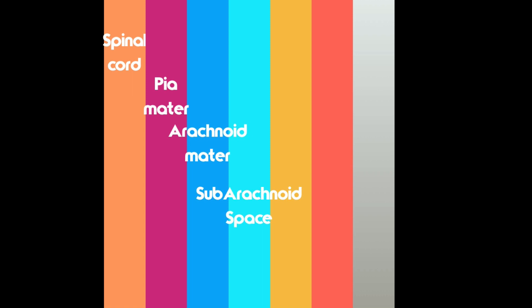To review the layers from inside out: first the spinal cord or brain being protected, then the pia mater (tender mother), then the arachnoid mater with its subarachnoid space filled with cerebrospinal fluid, then the dura mater (hard mother — tough canvas-like outer layer). Additionally, the epidural space sits just above ('epi') the dura mater, between it and the bone — the skull or vertebrae. This is where epidural anesthesia is administered during pregnancy to numb the lower body.